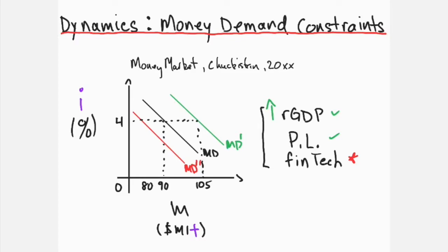Conversely, if fewer goods are bought and sold, a shift from MD to MD'' occurs. This shift toward the origin illustrates that at every short-term interest rate, less money is required for transactions — for example, 80 units versus 90 at four percent. Second, money demand increases with price levels; as levels rise, more units of money are required to buy the same item, and vice versa.